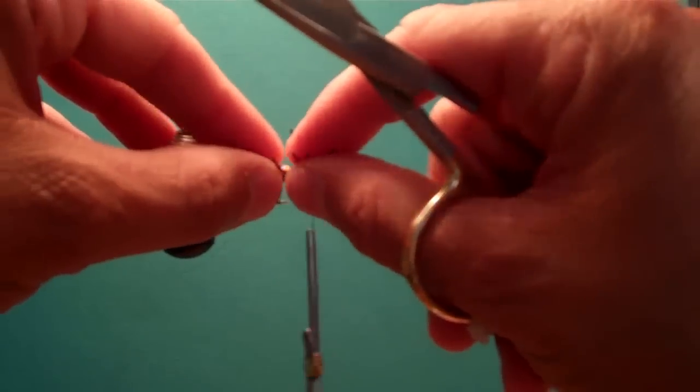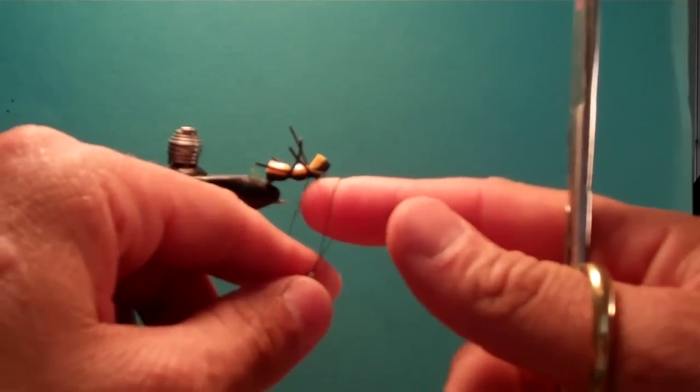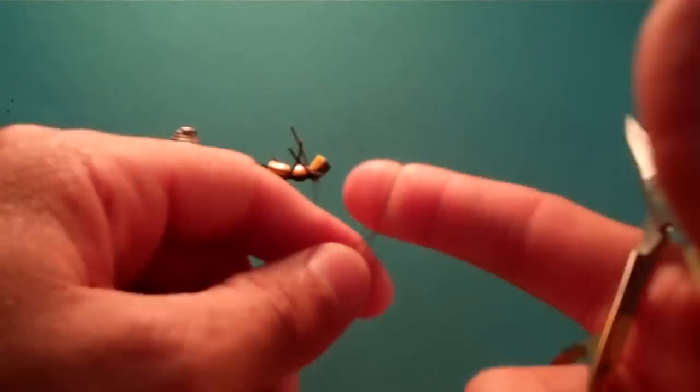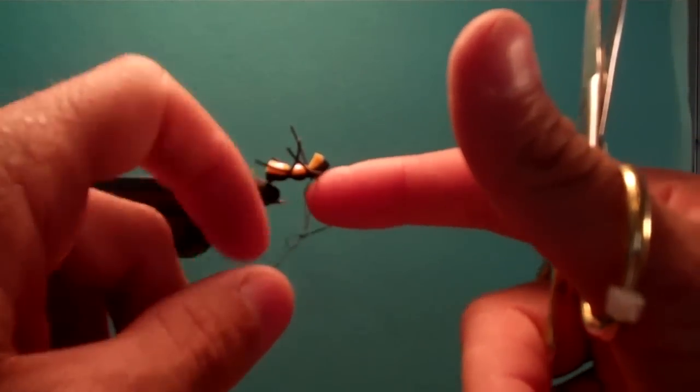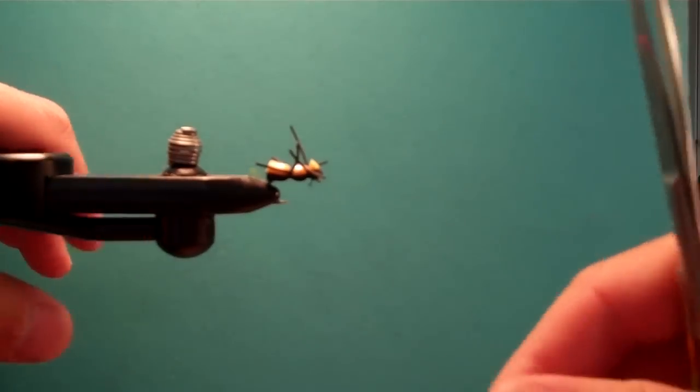But I don't care about that in flies. I want this to be balanced to float. And there it is. My legs are a little long. I'll trim those down. We're just going to do a quick little knot. Let's trim that head off just a little bit. There we go.